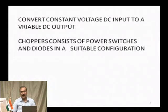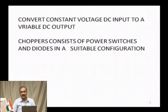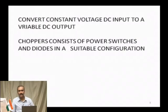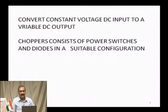When you studied about controlled rectifiers, you were varying the output voltage. In the case of chopper, the chopper consists of power switches and diodes in a suitable configuration — this line is very important. They are connected in a suitable configuration. The function of a power switch is simply to switch on and switch off. The importance of switching is that it should switch on immediately and switch off immediately — that is the basic requirement of a switch.